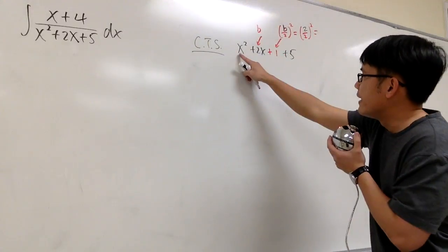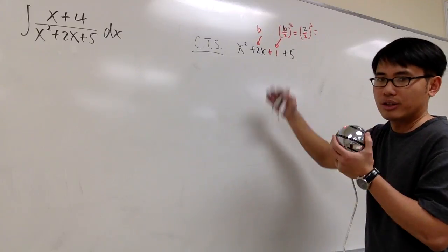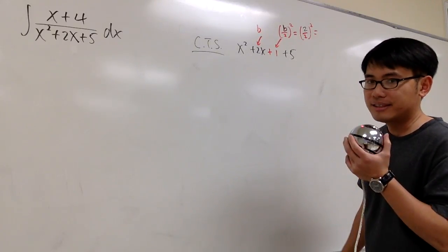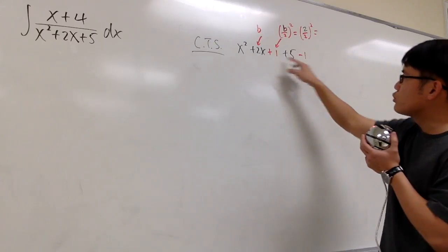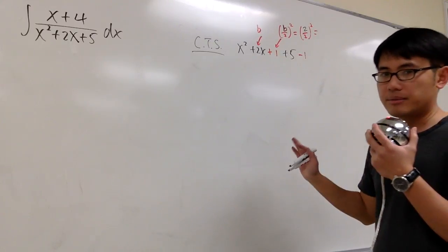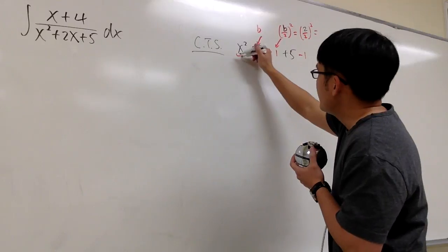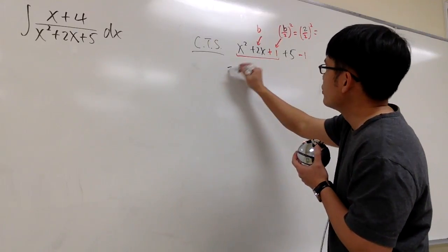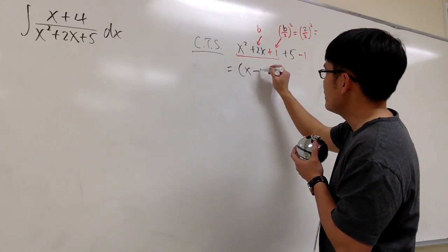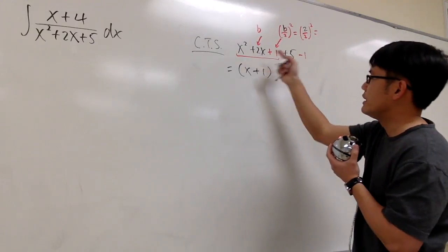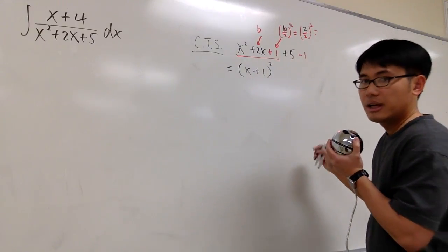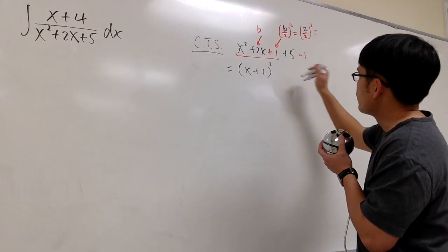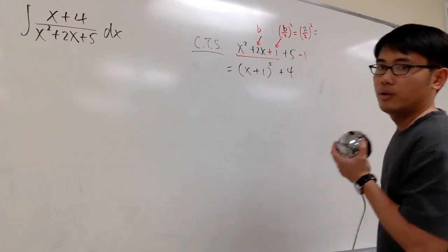But if I just add 1, then that will just ruin the expression and change the whole value. But it's not that bad because I can just immediately subtract 1. So you see, plus 1, minus 1, it's adding 0. Doesn't matter. And if you look at this part, this is going to be always factorable, and it's going to be something square, and it's going to be x plus 1 to the second power in this situation. And then plus 5 minus 1 is plus 4.